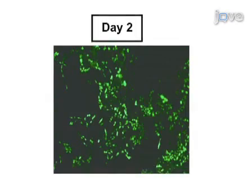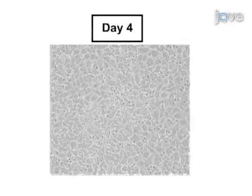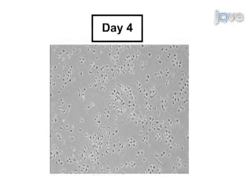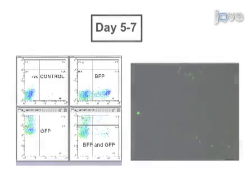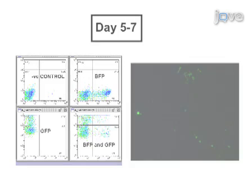The next step of the procedure is to monitor the control cells for fluorescence and to reduce the density of the experimental cells. Finally, the gene conversion frequencies can be determined in the experimental cells using flow cytometry at 5 to 7 days post-transfection.